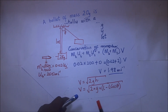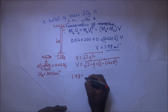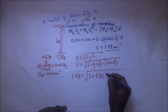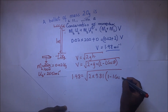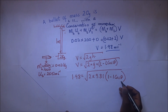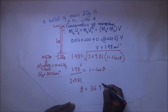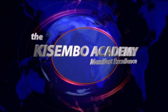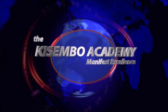Substituting the values: 1.98 = √(2 × 9.81 × 1 × (1 − cos θ)), and making theta the subject gives the maximum inclination of the string to the vertical. That brings us to the end of this video. Thanks for watching — feel free to check out other excellent videos on the channel and don't forget to subscribe. For Kisembo Academy, this is Anand Rangakuramia helping you manifest excellence.